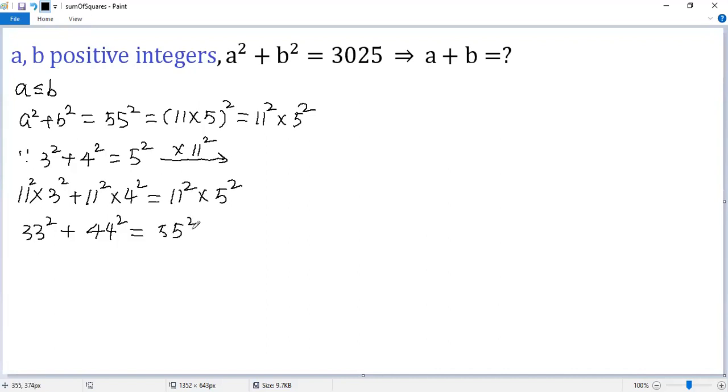So we get a solution to the given equation: a equals 33, b equals 44. So the sum a and b equals 33 plus 44 equals 77.